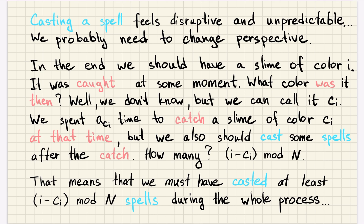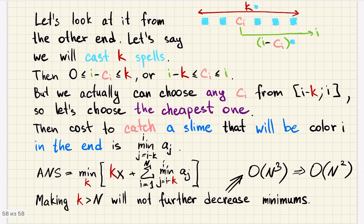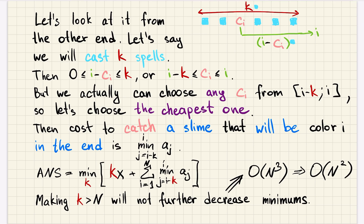We looked from another angle and understood that we must cast at least a certain number of spells for every i. Then we changed perspective again: having proven the minimum number of spells, if we fix the number of spells, that limits our choices of C_i. And it turns out that's the only limit on C_i, giving us a solution. This is clearly not DP and not exactly greedy — choosing the cheapest on the segment is greedy, but the whole solution is just a chain of observations leading to the formula.